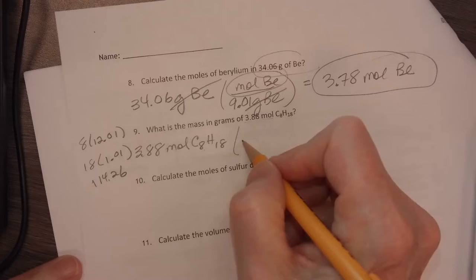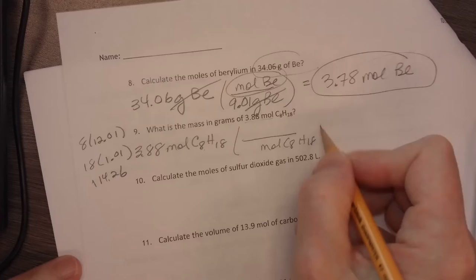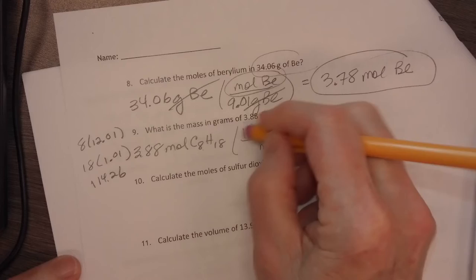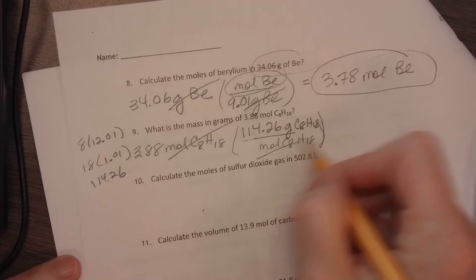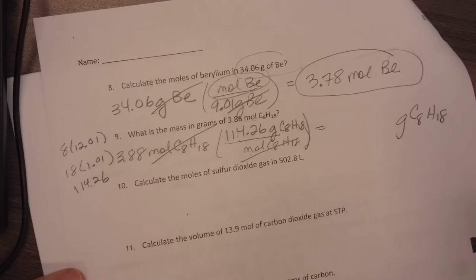And so I know that I, in this case, I need moles to divide out. So I have to have moles on the bottom. I'm going to be multiplying it by the molar mass, which is 114.26 grams of octane per mole of octane.